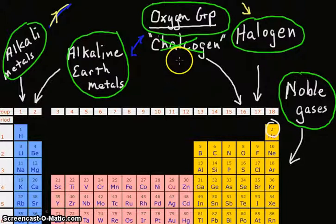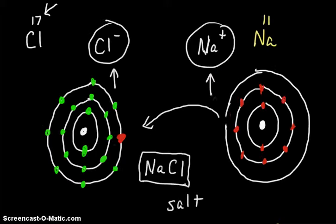So remember, watch the other videos. Know what the valence electrons are. Know how to read the groups of the periodic table and understand the reason why ionic bonds are formed. All right, thanks for watching.